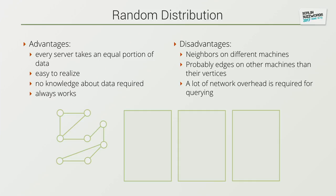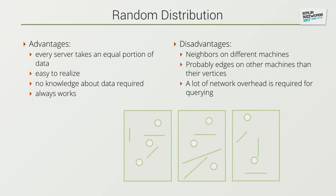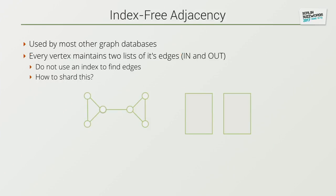The disadvantages of random distribution: most likely the neighbors will be on different machines, and probably the edges on even other machines. A lot of network overhead is required for querying. If you apply a random distribution of this graph on three servers, you probably end up with something hard to make sense of — no chance of figuring out what the graph actually was. And that's the same for the query engine, because it just starts somewhere and has to figure out where the connected edge is, then where the node is, and so on.